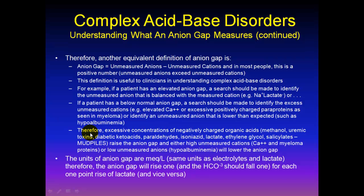Think about anion gap in terms of unmeasured anions minus unmeasured cations. Whenever the anion gap is high, think about what the possibilities are — and whenever it's low, there are really two possibilities: either unmeasured anions are low, or unmeasured cations are high. In cases of an elevated anion gap, excessive concentrations of negatively charged organic acids are the cause. The famous list — the acronym MUDPILES: Methanol, Uremic toxins, Diabetic ketoacids, Paraldehyde, Isoniazid, Lactate, Ethylene glycol, and Salicylates — raises the anion gap. High unmeasured cations such as hypercalcemia or myeloma proteins, or low unmeasured anions such as hypoalbuminemia, will lower the anion gap.